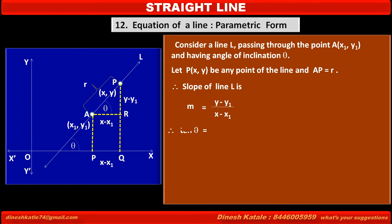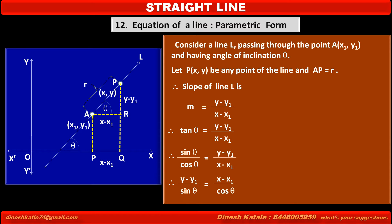Since the angle of inclination is theta, the slope tan theta equals (y minus y1) upon (x minus x1). Therefore, tan theta, that is sin theta upon cos theta, equals (y minus y1) upon (x minus x1). We can write this equation as (y minus y1) upon sin theta equals (x minus x1) upon cos theta.